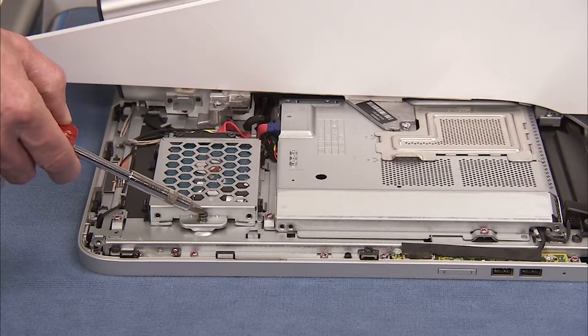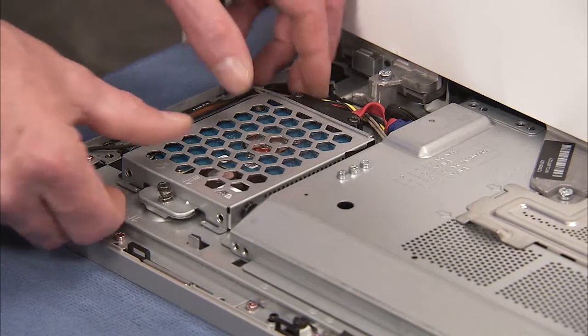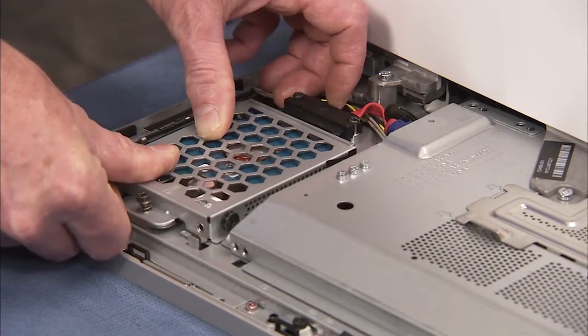Loosen the captive Phillips No. 2 screw for the hard drive. Slide the hard drive cage out to the side, then pull the hard drive cage out of the PC.